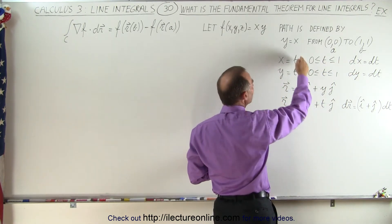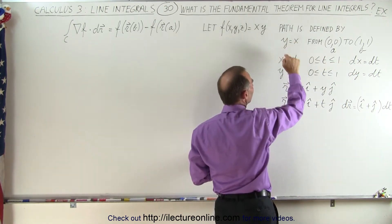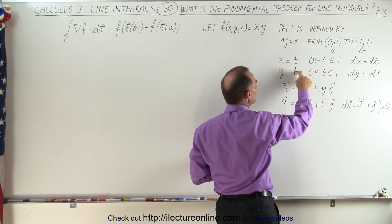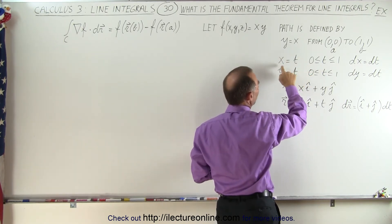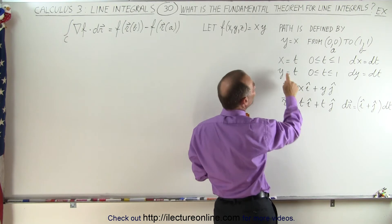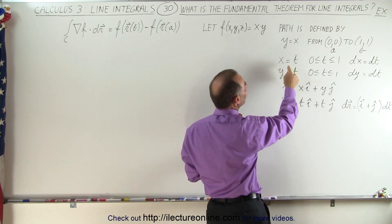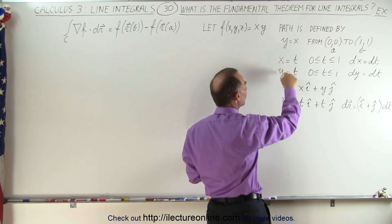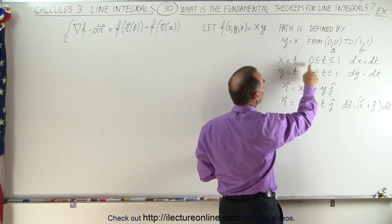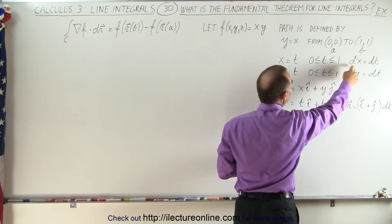And we can then write the function, the path, in terms of the parameter variable t, so the two parametric equations are x equals t and therefore y equals t since x equals y and t is going to be defined from 0 to 1 and dx and dy will then be defined as dt.